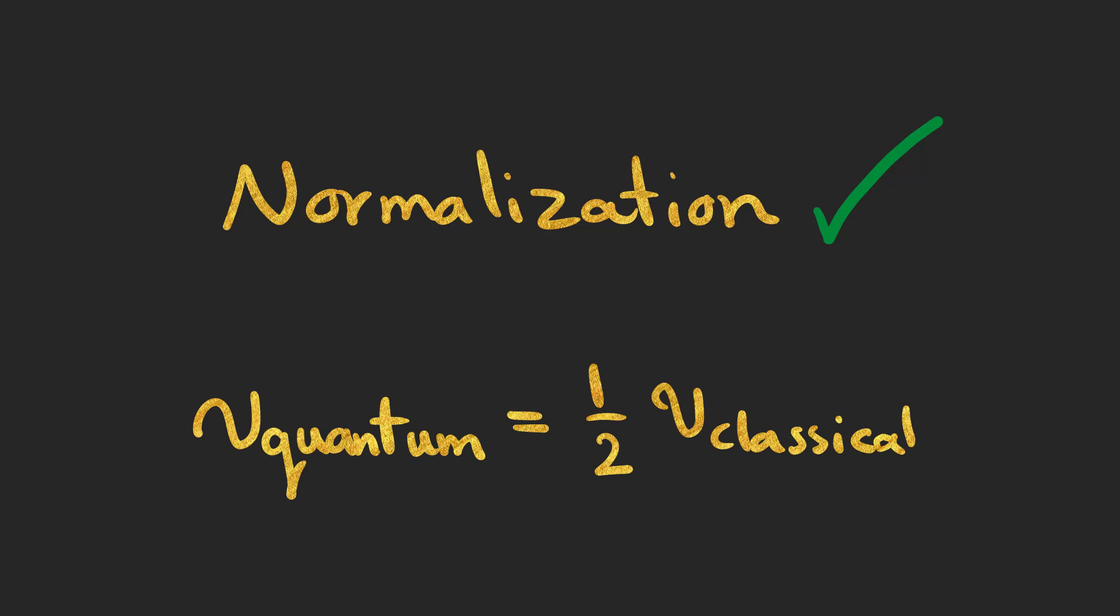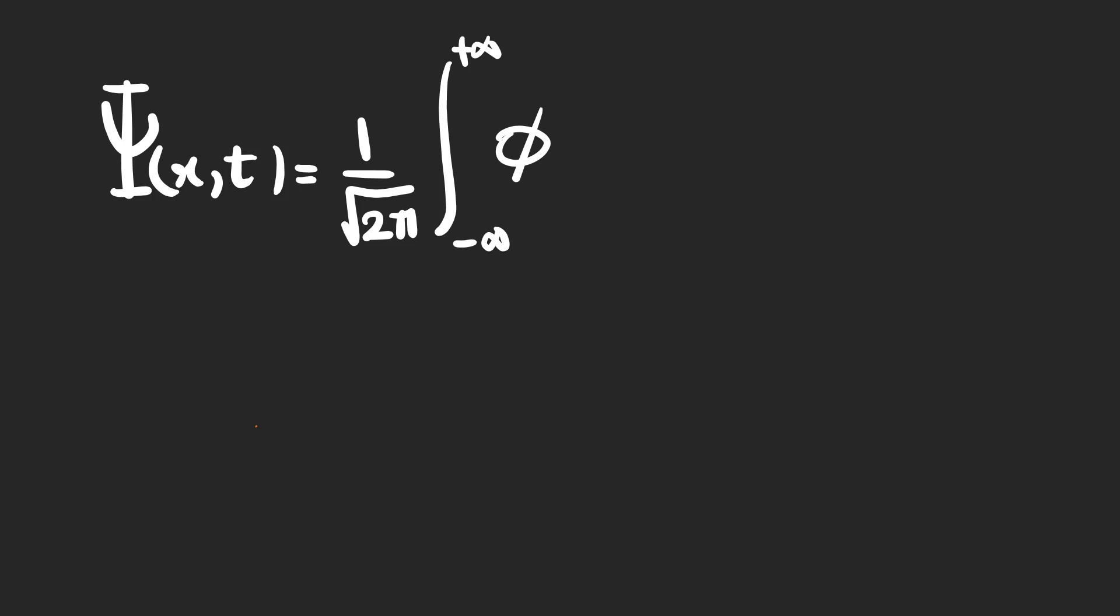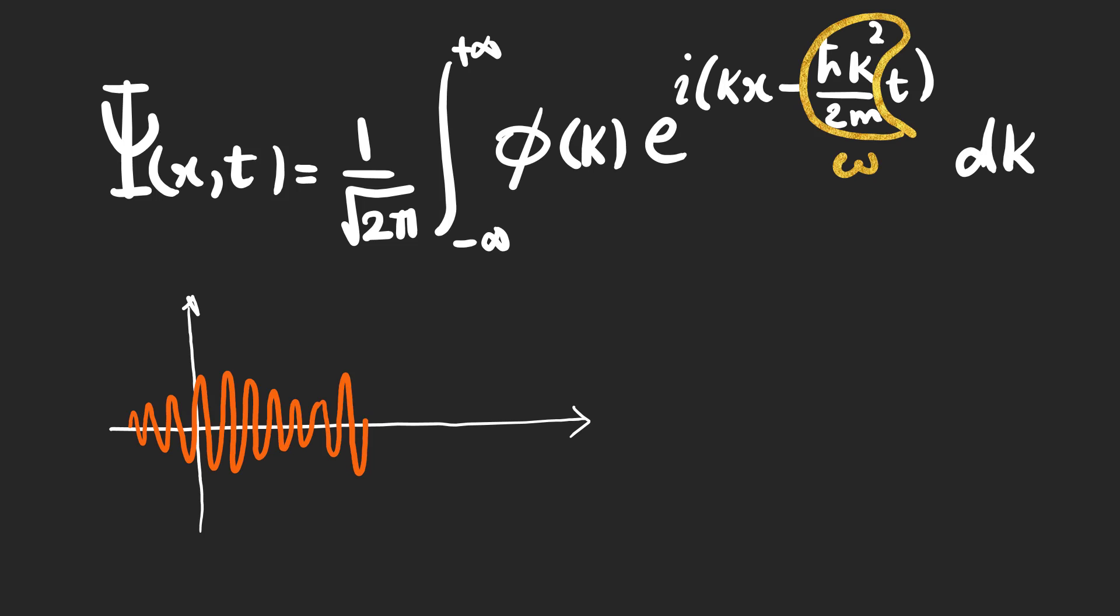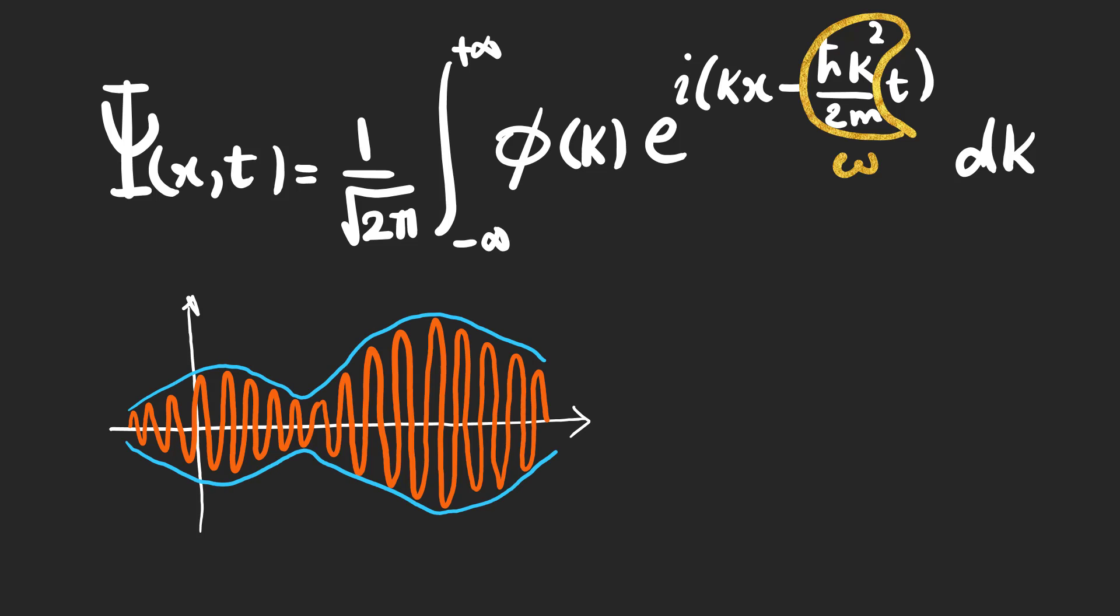Now that the normalization problem is solved, let's see how we can deal with this paradox. The wave packet represented by this integral is a superposition of sinusoidal functions which are contained in an envelope.